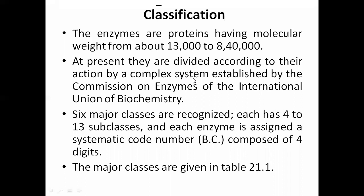The classification was established by a complex system by the Commission on Enzymes of the International Union of Biochemistry (IUB). They classified enzymes according to their action into six major classes, each having four to thirteen subclasses. Each enzyme is assigned a systematic code number composed of four digits.